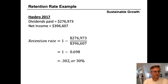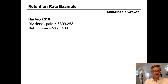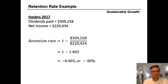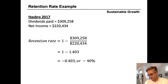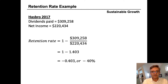Now let's look at another example that is very interesting. In the next year, Hasbro 2018, they paid $309 million in dividends on a net income of only $220 million. Plugging those numbers into our retention rate formula — 1 minus dividends paid over net income — 309 divided by 220 gives us 1.403. So 1 minus 1.403 gives us negative 0.4, or minus 40%. The dividend payout rate is 140% of earnings. How could the payout rate be more than they earned? Once a company has established a certain dividend payout rate, those tend to be very sticky.